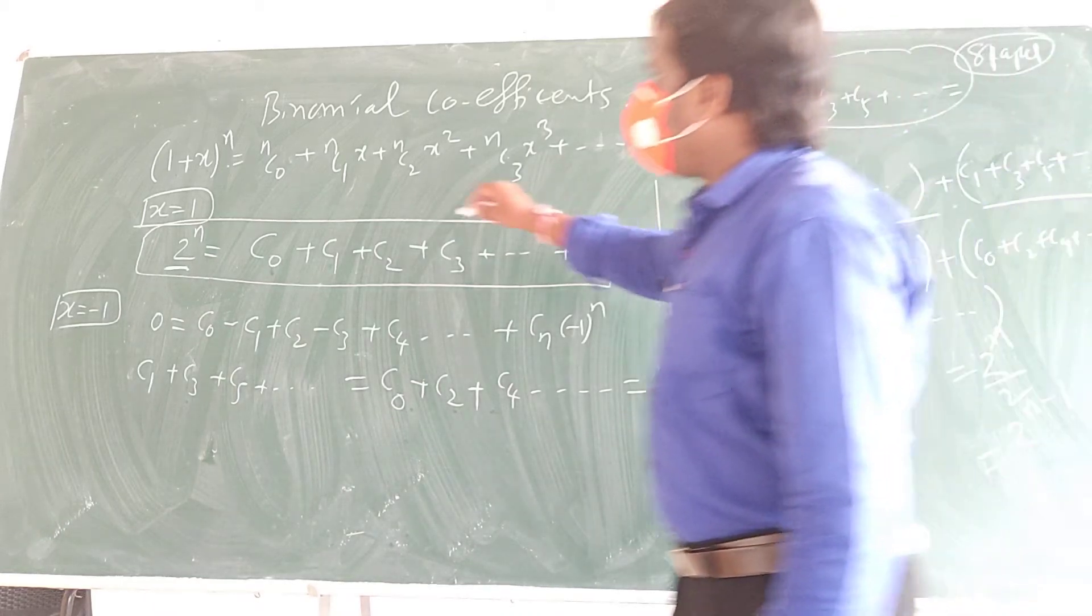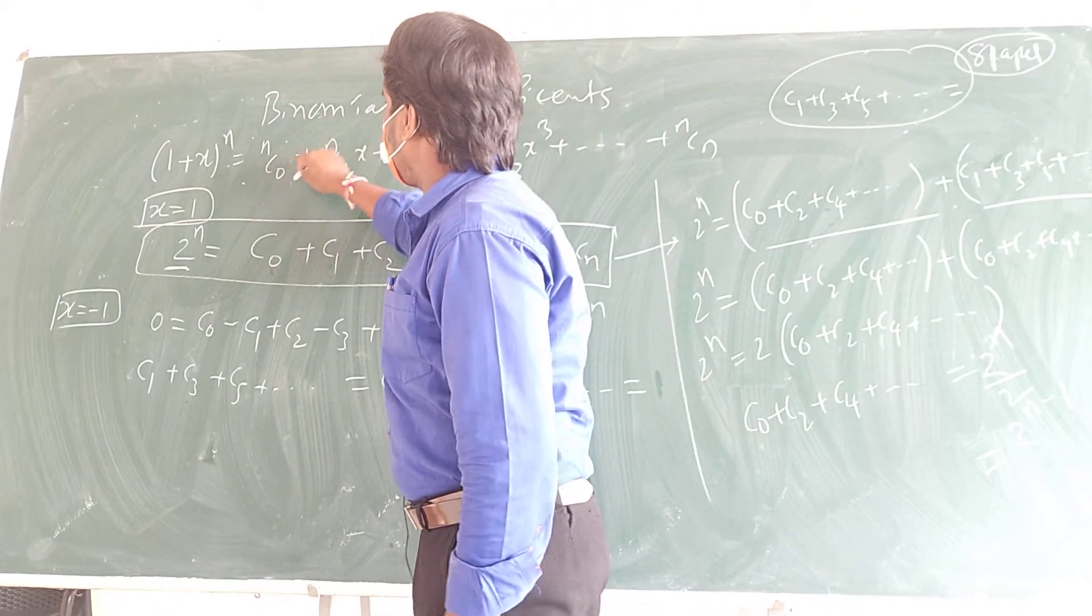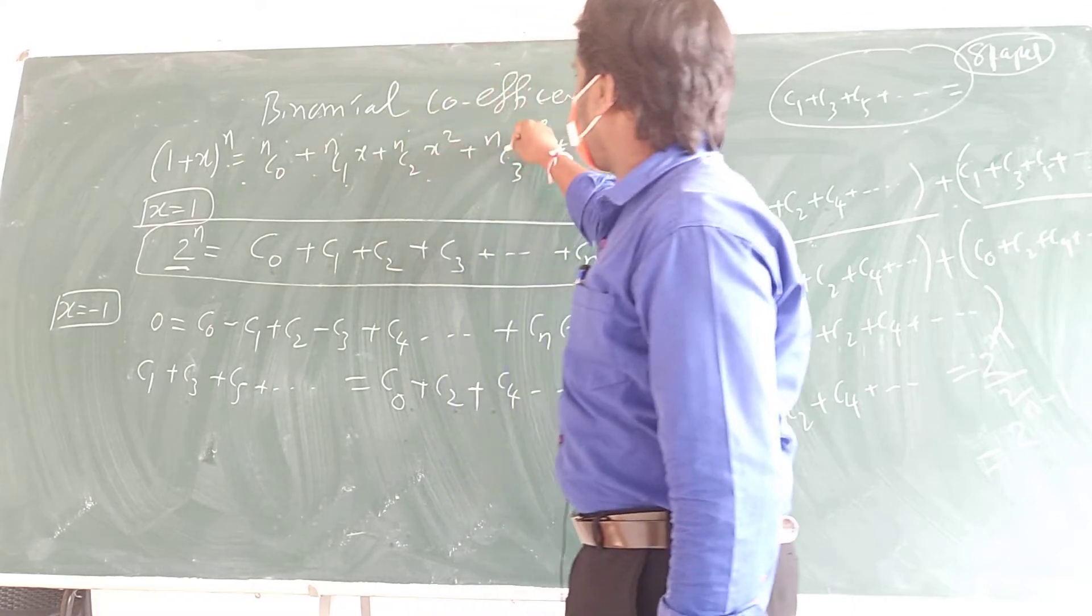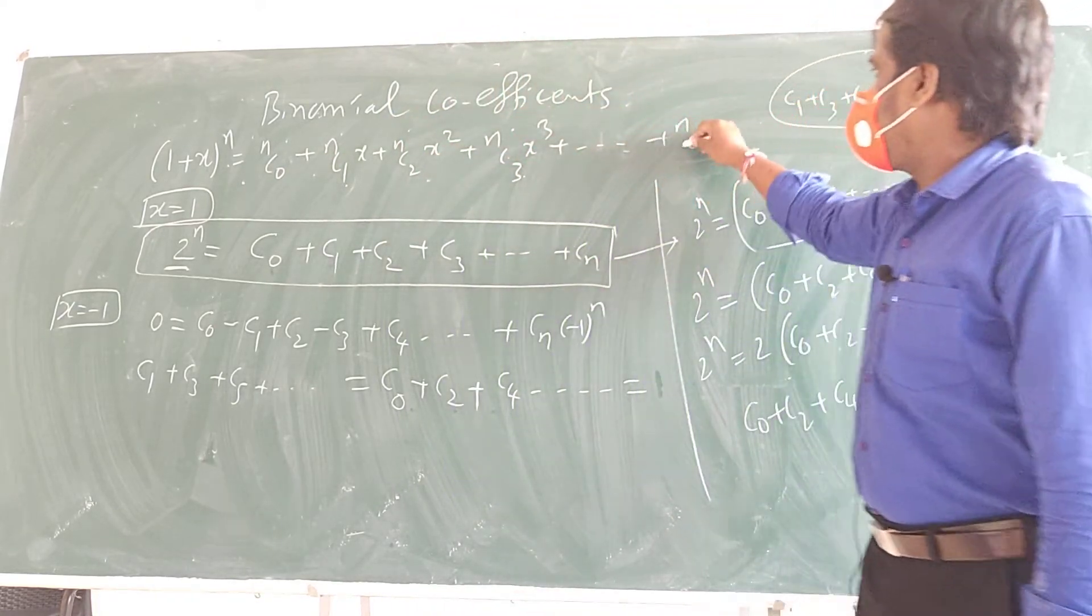On this, see here. (1+x)^n is equal to nC0 + nC1·x + nC2·x^2 + nC3·x^3 + ... + nCn·x^n.